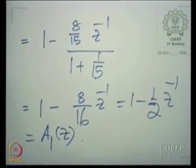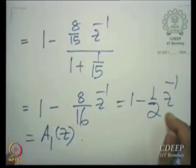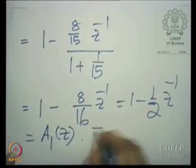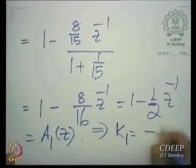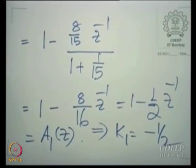As expected, the coefficient of z to the power 0 in A1(z) comes out to be 1. Therefore, the coefficient of the highest power, namely z-inverse in A1(z), is K1, which means K1 equals minus one-half. Once you have K1, you have completed the lattice for the denominator. But now we need to write the lattice for the numerator.